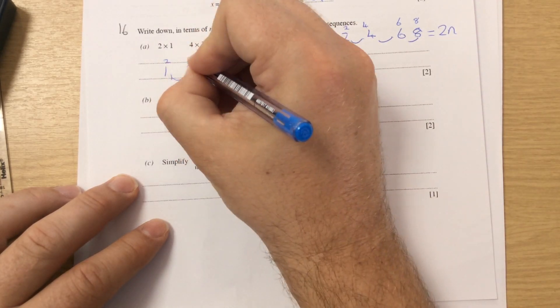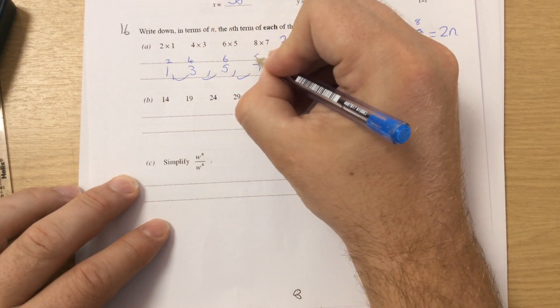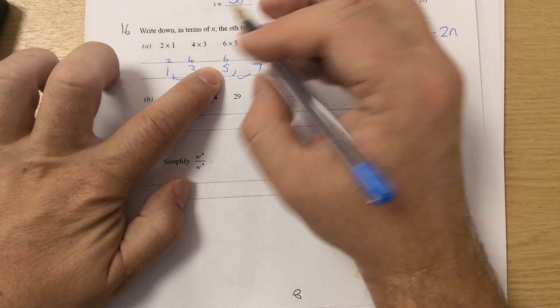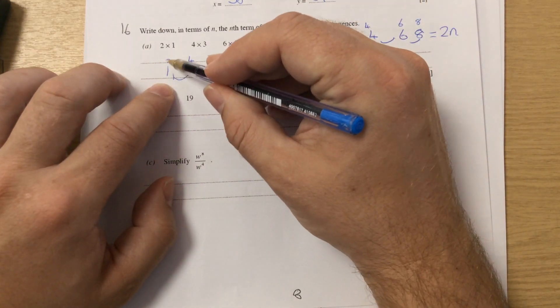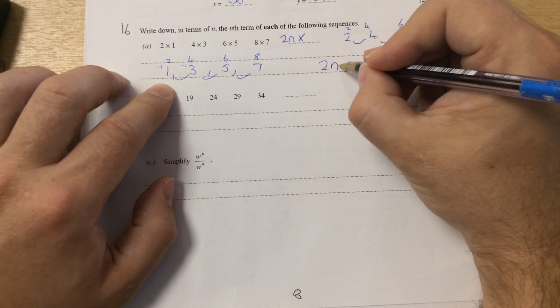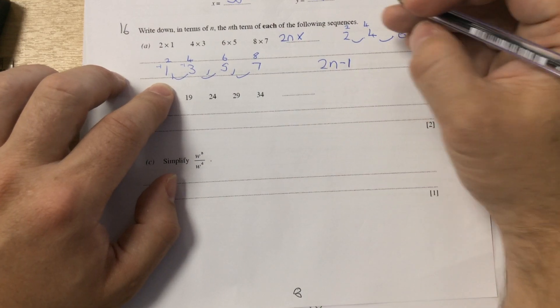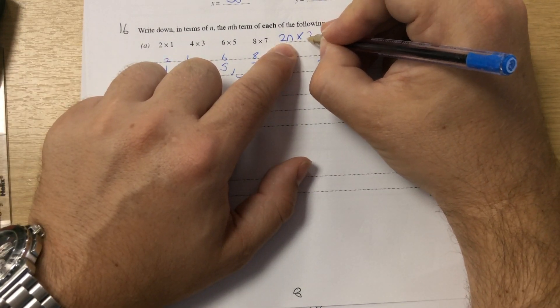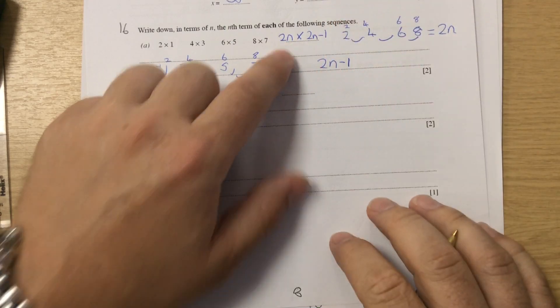And I write my two times table above it. But 2 isn't the same as 1, 4 isn't the same as 3, 6 isn't the same as 5. So you've got to take away 1 because 2 take away 1 is 1, 4 take away 1 is 3. So that one would be 2n take away 1. So your answer is 2n times 2n take away 1.